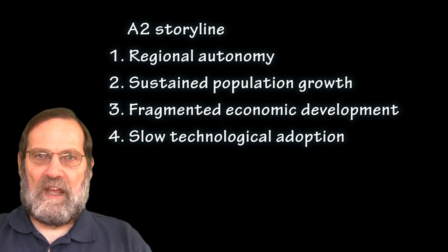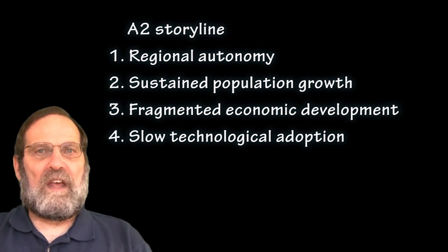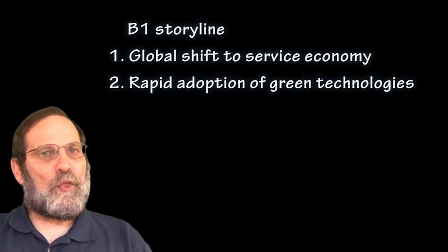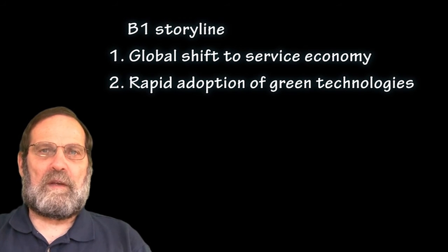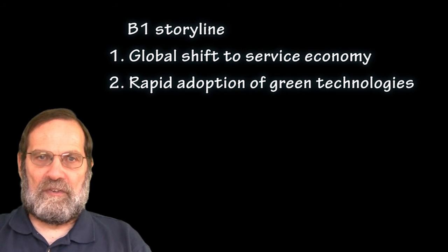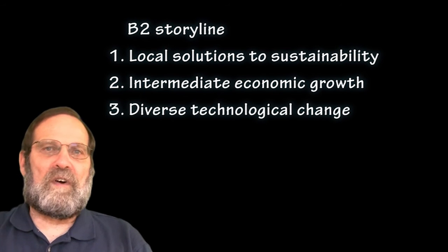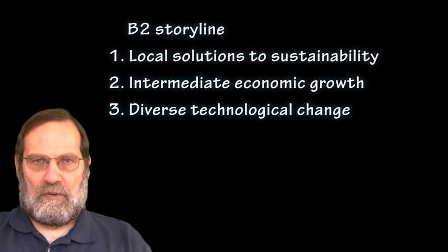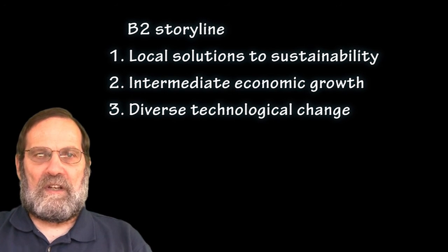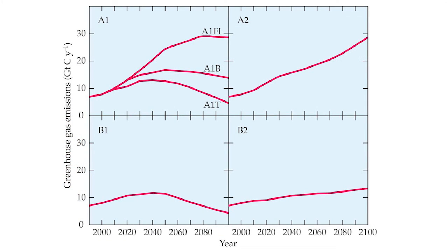Another storyline, named A2, emphasizes regional autonomy with sustained human population growth, fragmented economic development, and slow technological adoption. A third storyline, named B1, assumes a worldwide shift to a service and information economy with large-scale adoption of clean and resource-efficient technologies. A fourth storyline, named B2, focuses on local solutions to economic, social, and environmental sustainability with intermediate economic growth and diverse technological change. All of these scenarios build upon an understanding of sources and sinks for greenhouse gases.